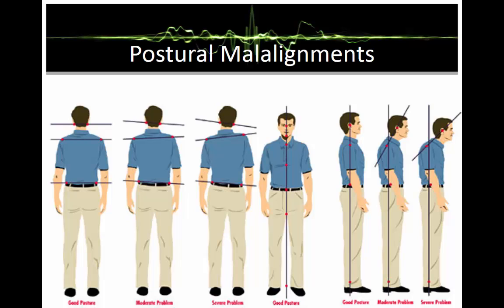Postural malalignments can happen in many different areas of the body. One of the areas most commonly affected is the spine. We can see images of good posture, moderate problems, and severe problems. Muscle energy can be utilized to help individuals with moderate and severe problems try to become realigned, or as close to good posture as possible.